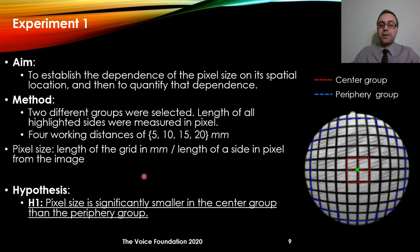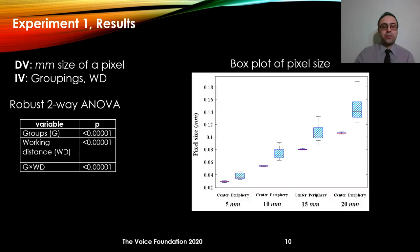We computed the value of pixel size, which was the length of a grid line in millimeters — since it is a calibrated paper, we know each line is one millimeter — divided by the length of each of these highlighted lines from the image. The hypothesis was that the pixel size is significantly smaller in the center group than in the periphery group. In order to test this hypothesis, we ran a two-way ANOVA. The dependent variable was millimeter size of a pixel, and the independent variables were grouping and working distance. Based on the result of the ANOVA, we see a significant main effect of grouping, a significant main effect of working distance, and also a significant interaction effect.